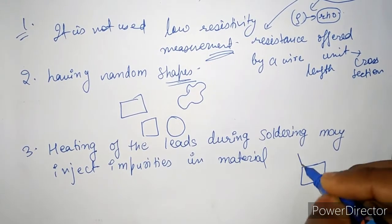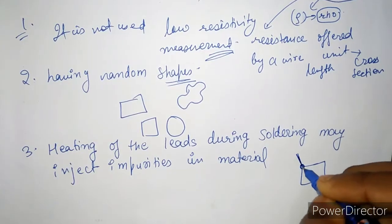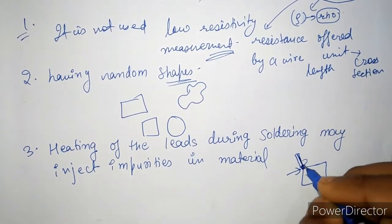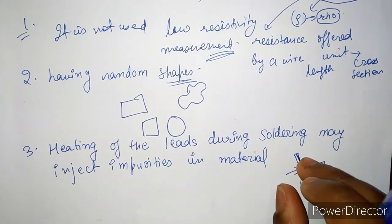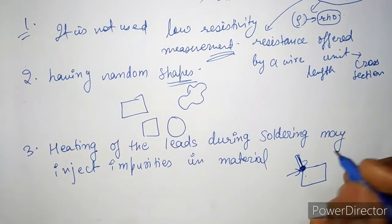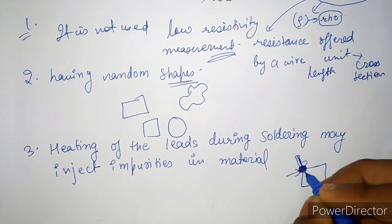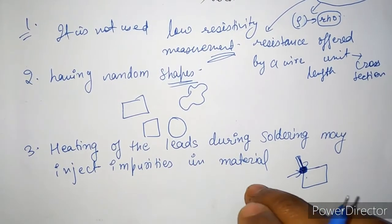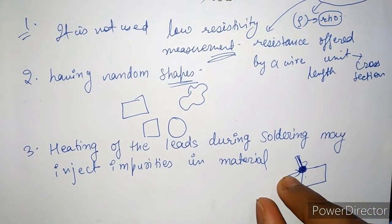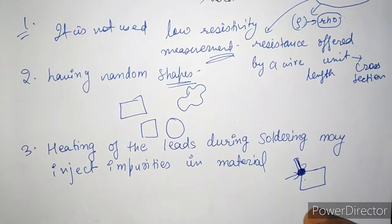If we have to connect this rod from this material, we have to do soldering at these joints, then it may inject impurities in the material because we are adding something extra to this material, and therefore this affects the intrinsic electrical resistivity.